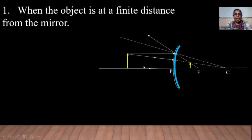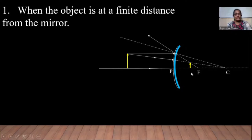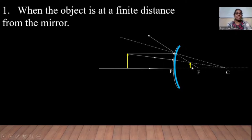As the object comes from infinity towards the mirror, the image travels from the focus towards the mirror. As you come closer to the mirror, the image is also coming closer to the mirror. The image formed by the convex mirror is virtual, erect, and diminished — it is not enlarged.